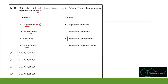Bleaching is the removal of pigments using diatomaceous absorbent to remove colored substances, so R matches option 2. Winterization separates waxes or different oil fractions based on their freezing points by cooling the oil, so S matches option 1. Therefore, the correct answer is option C.